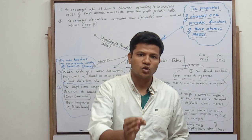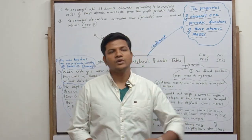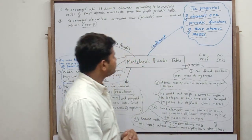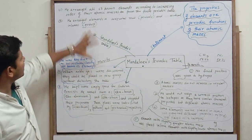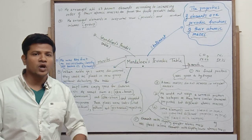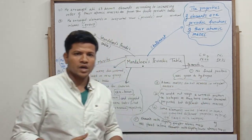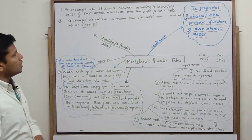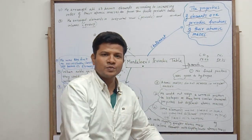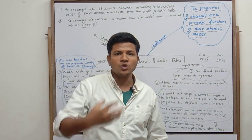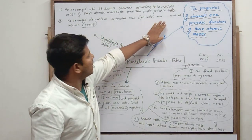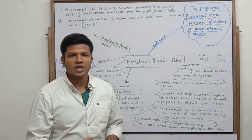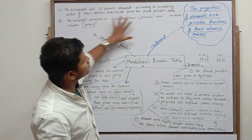Mendeleev was the first scientist to arrange all 63 known elements into a single table. His periodic table looked like this: he arranged all the 63 known elements in increasing order of their atomic masses. His table was in the form of horizontal rows and vertical columns. Horizontal rows were called periods and vertical columns were called groups.